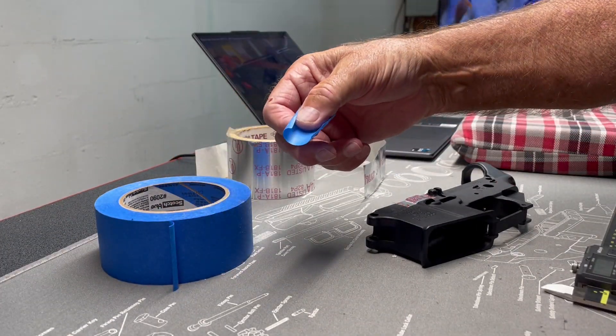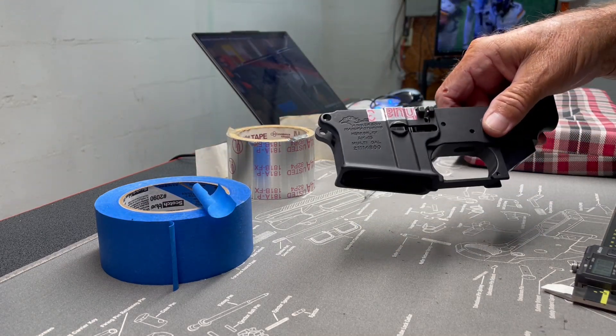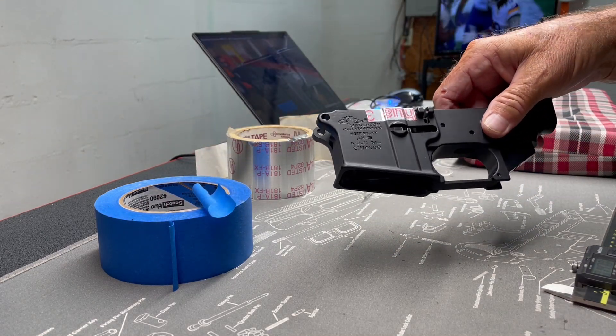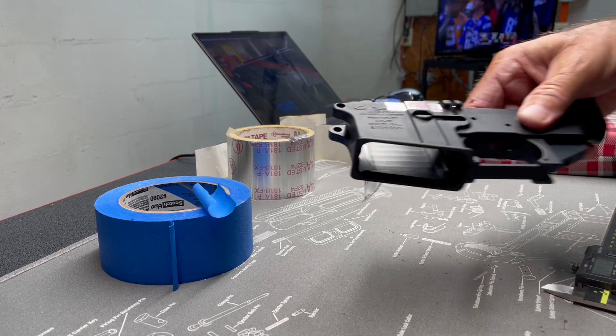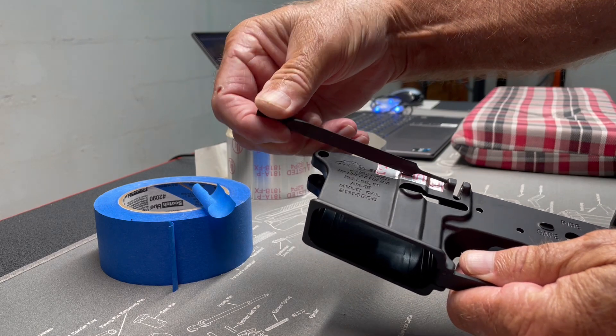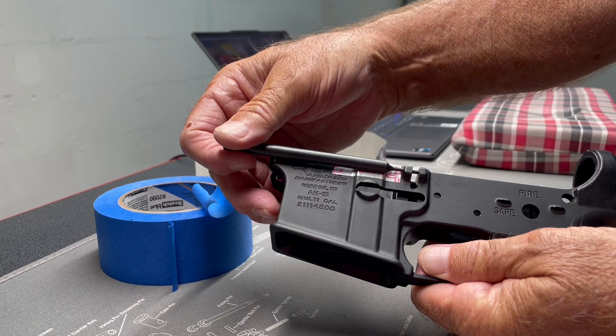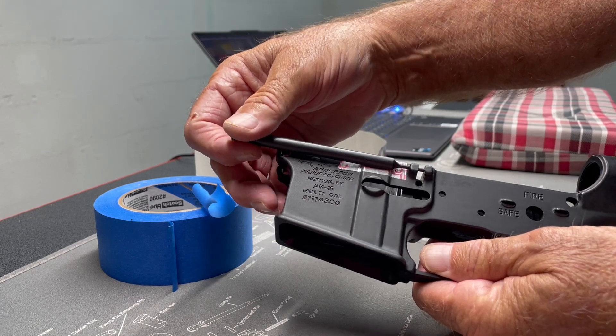I've actually dug through a piece of this before, scratched up a lower, and I found that this aluminum tape is going to be more durable. So when you go to remove the roll pin, you're less likely to scratch up the magwell.